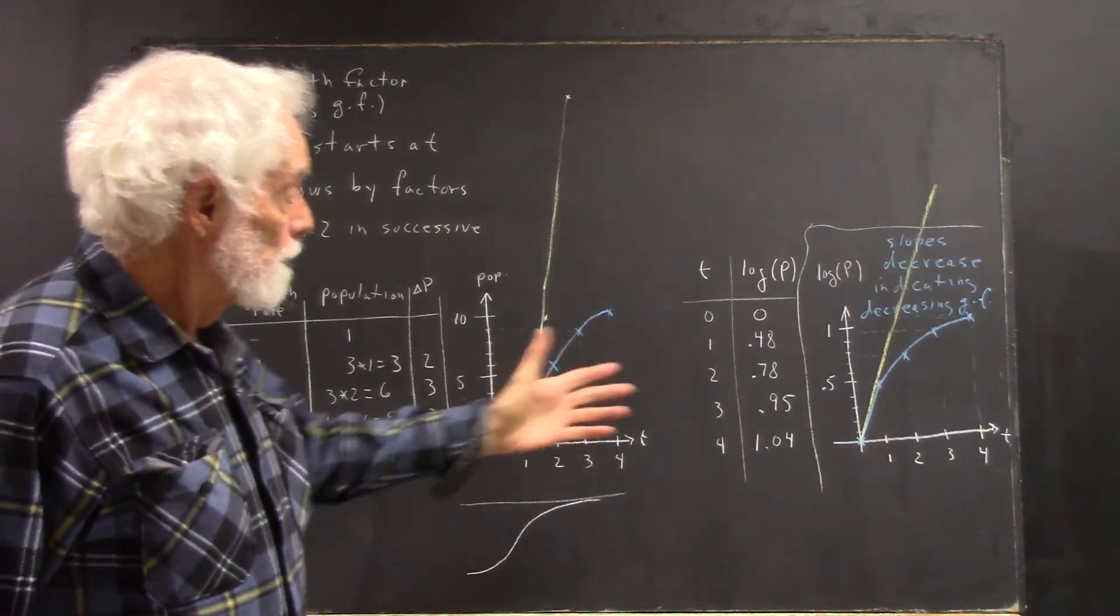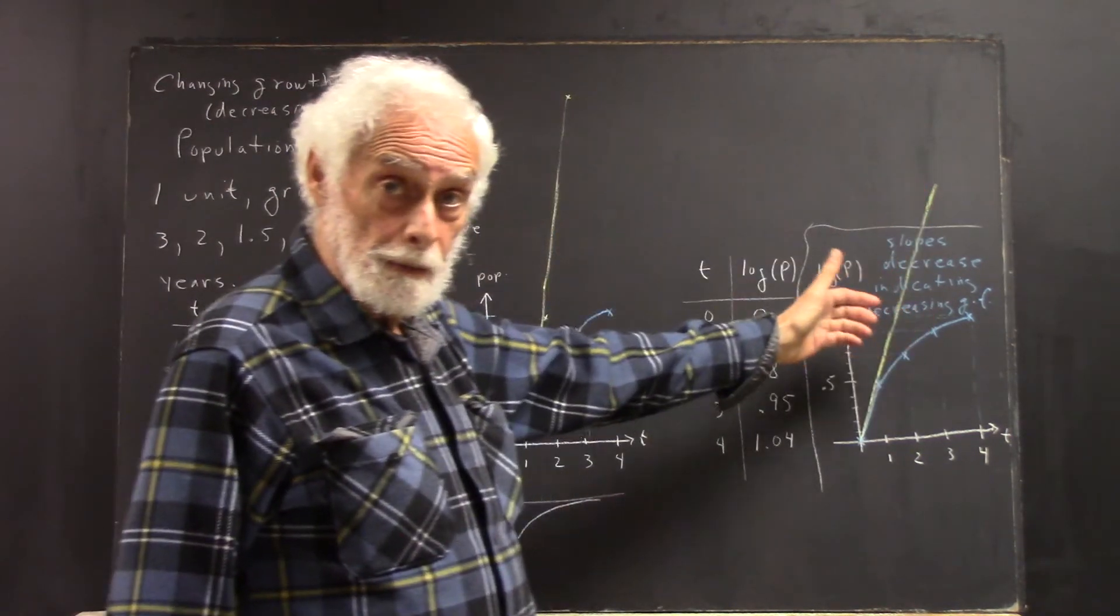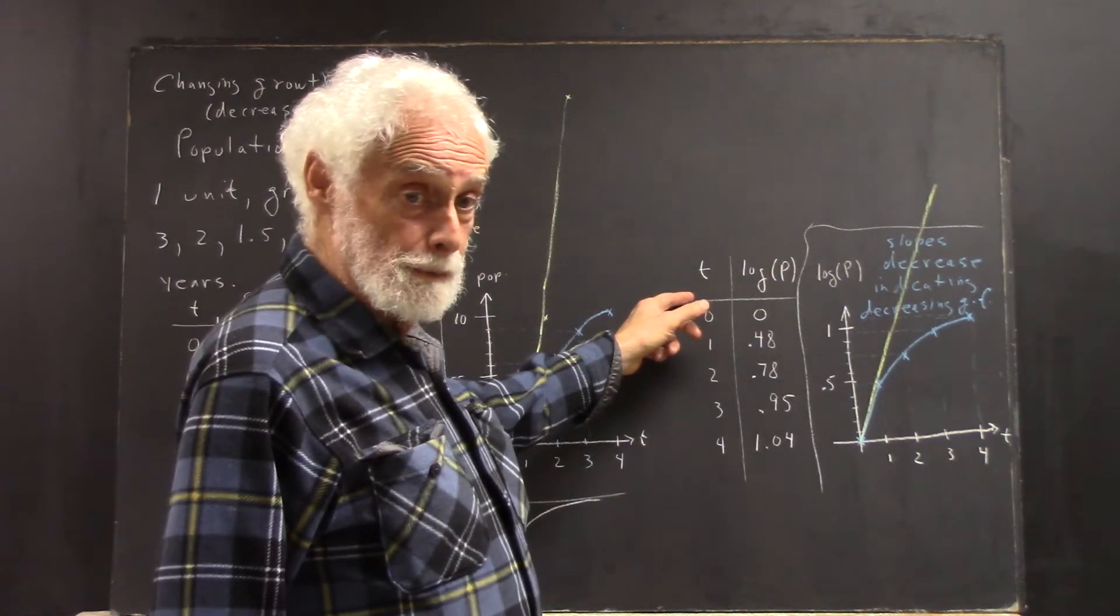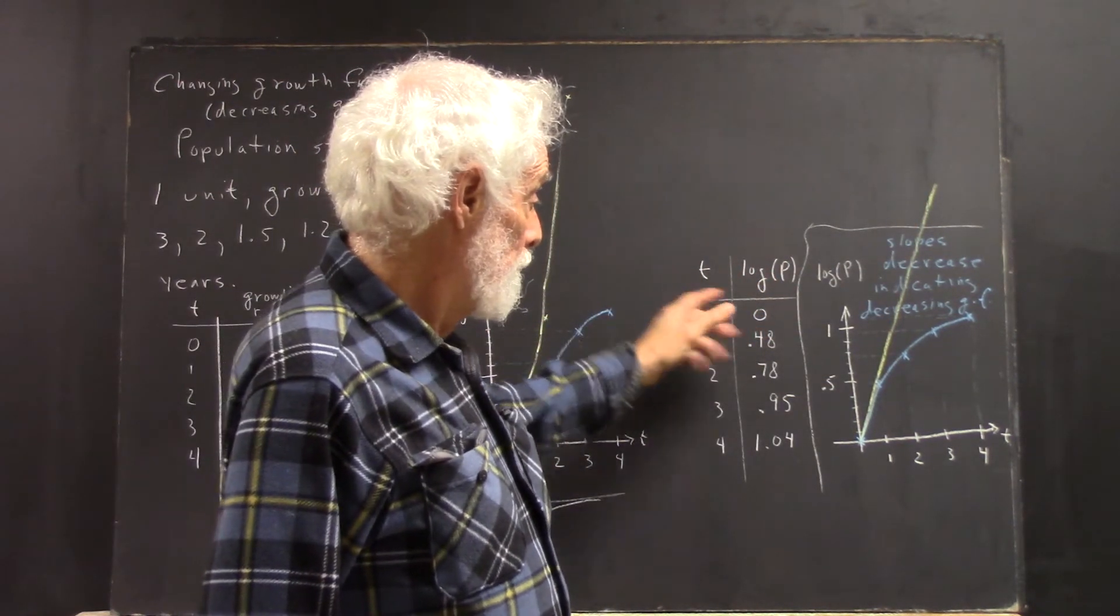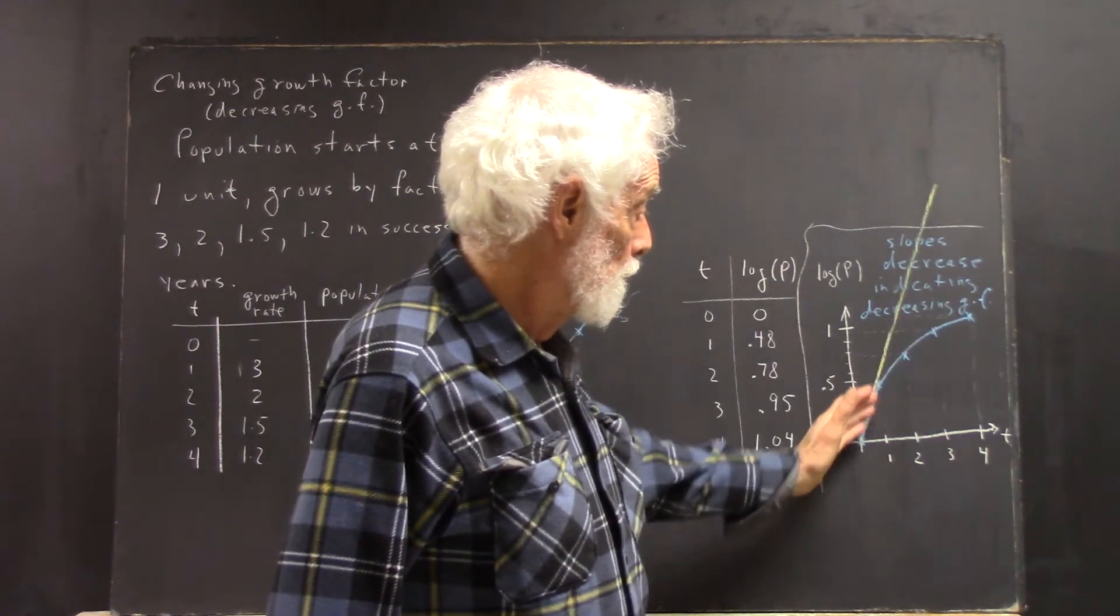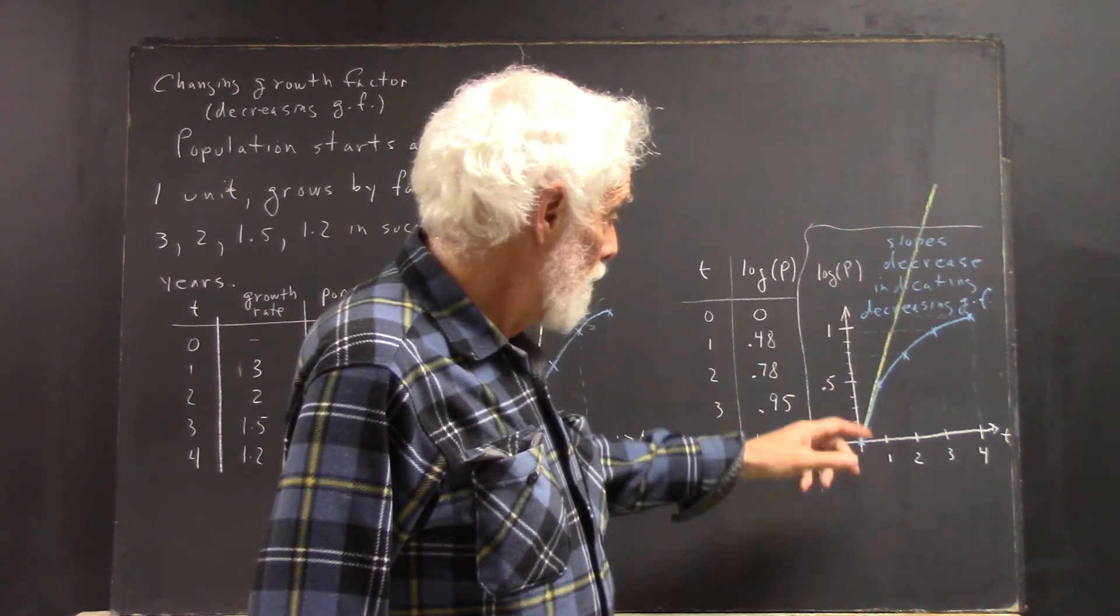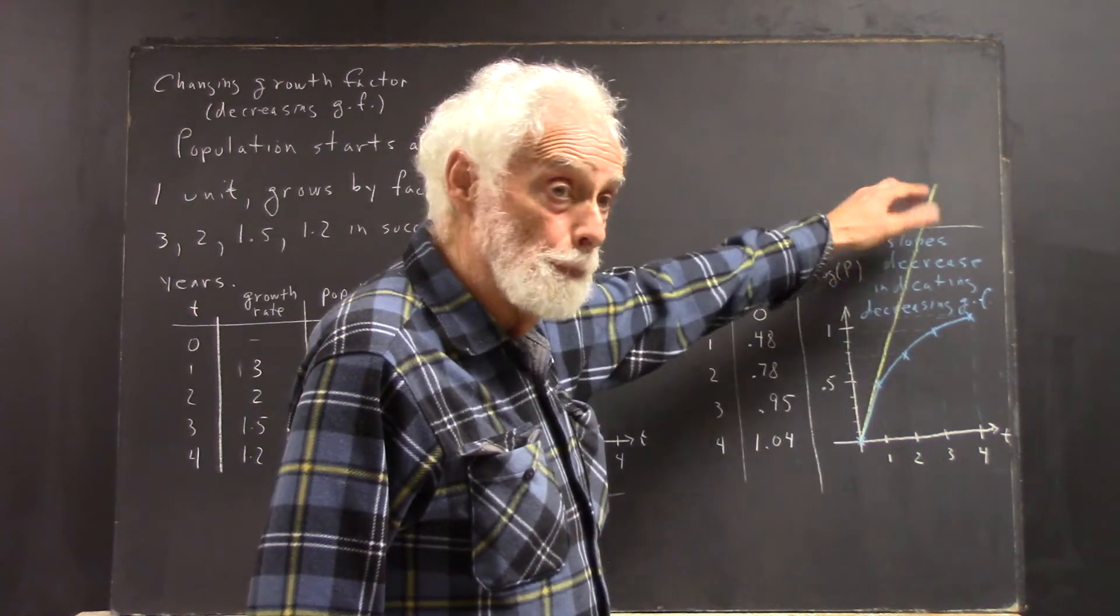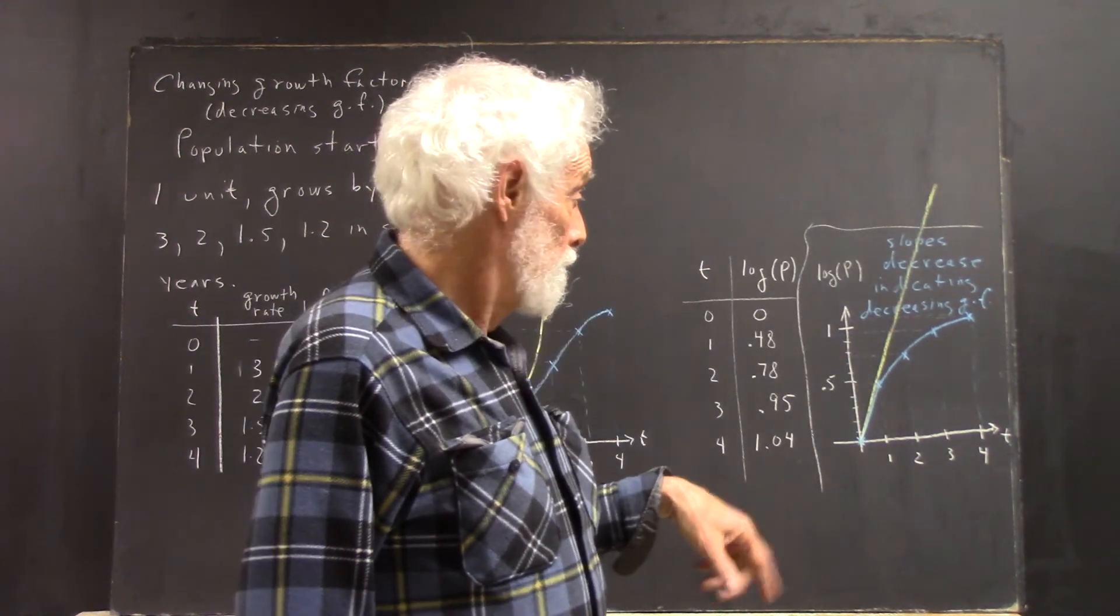And of course, this applies to any population model. Okay, here's unrestricted growth on the log plot. And here is a graph that shows you how the slopes keep changing. The unrestricted growth has a constant slope on the log graph for reasons that we've seen.